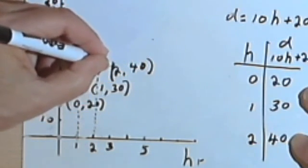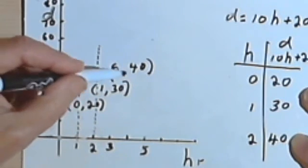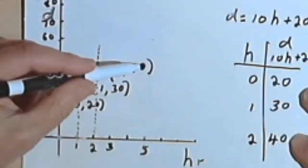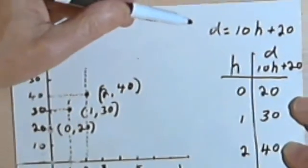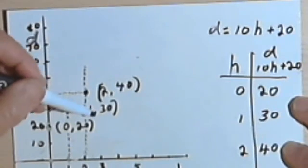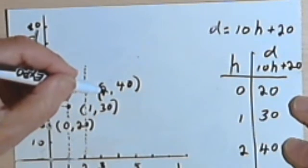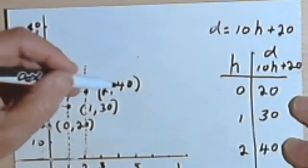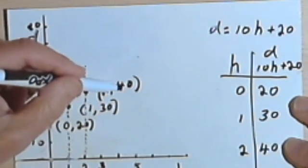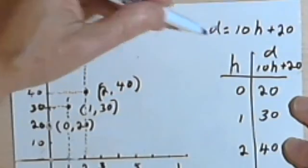So if you're given a problem and they say, explain what this ordered pair, 2, 40, means, in terms of this word problem, this situation, you would say, well, when you work 2 hours, you've got 40 dollars in your pocket. That's basically what this ordered pair is saying in terms of dollars and hours.